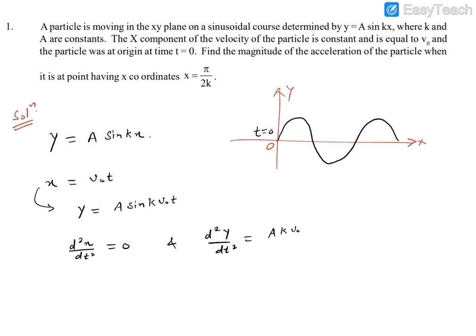minus A K² V0² sin K V0 into T. If we get A K V0, T can then write X, because x coordinate, so this could also be written as K into X.